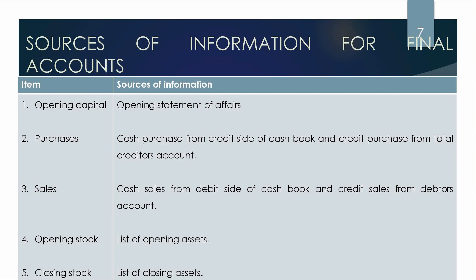Purchases missing — cash purchase from credit side of cash book; credit purchase is missing, from total creditors we will get the credit purchase. Sales is missing — cash sales from cash book; credit sales is missing, from debtors account we will get the credit sales. Next is the opening stock missing — only possible from the opening assets list; closing stock is available in closing stocks.